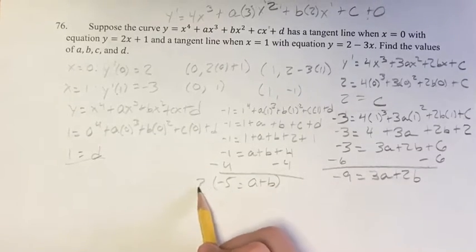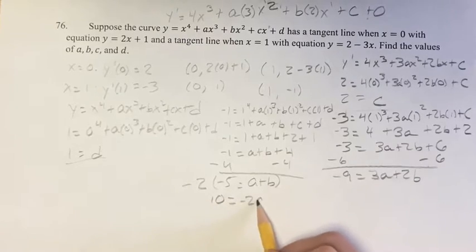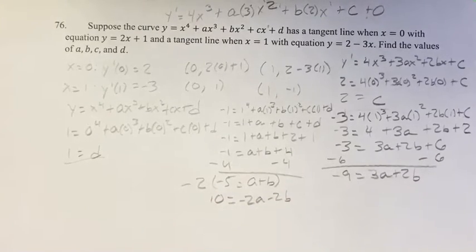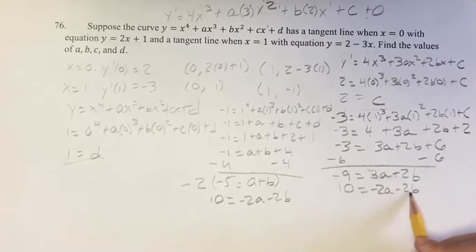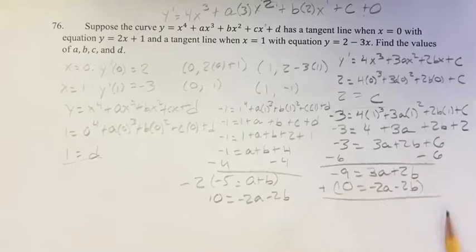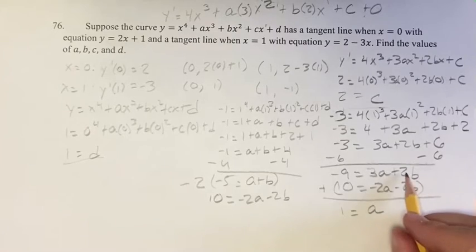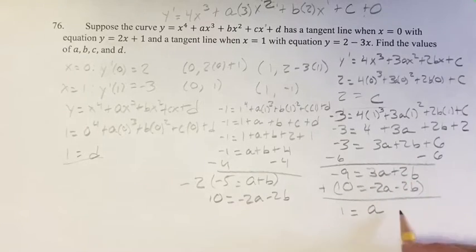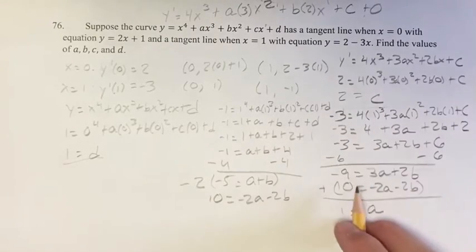Multiplying a plus b equals negative 5 by negative 2 gives 10 equals negative 2a minus 2b. Why multiply by negative 2? Because now we can use elimination. Adding this to the equation negative 9 equals 3a plus 2b: negative 9 plus 10 is 1, and 3a minus 2a is a, and 2b minus 2b is 0. So a equals 1.